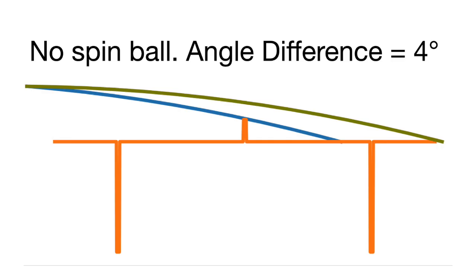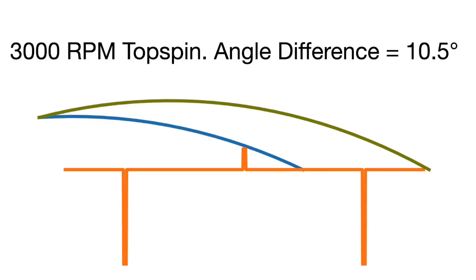First, let's look at the margin of error for a ball with no spin. We're looking at a side view of the table. For the no-spin ball, the difference between the two limiting angles is 4 degrees — not a bad margin of error. But if the ball now has a topspin of 3000 rpm, the difference in angle changes to 10.5 degrees. That means the margin of error has more than doubled. This is what makes topspin so reliable.